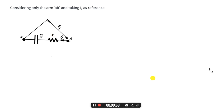Since I1 is the same current flowing through the resistor and the capacitor, the voltage drop in the resistor will be I1 × R1. Since in a purely resistive circuit the voltage is always in phase with the current, I1 × R1 — that is, the voltage drop of the resistor — will be along the x-axis. The voltage drop in the capacitor will lag the current by 90 degrees, so the voltage will be along the y-axis in the opposite direction.